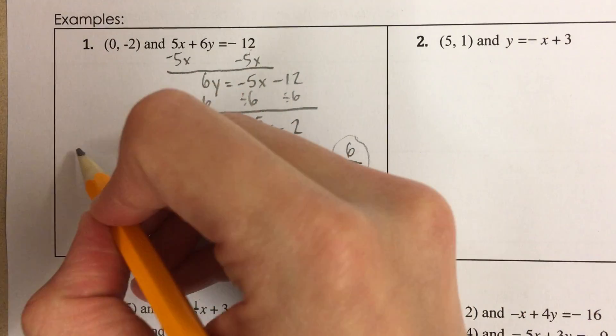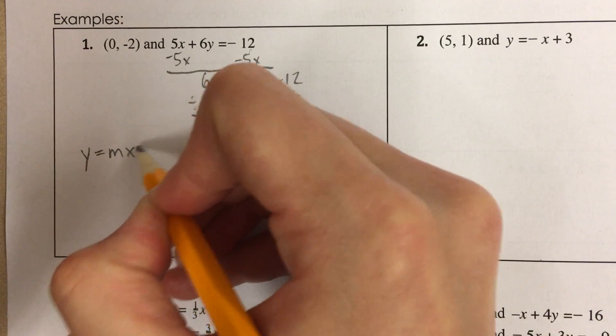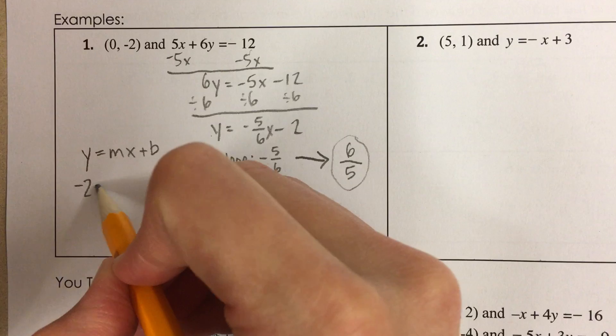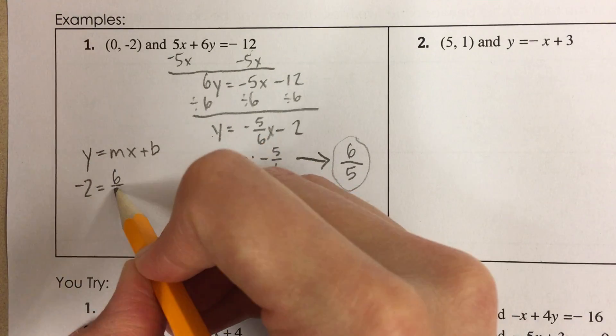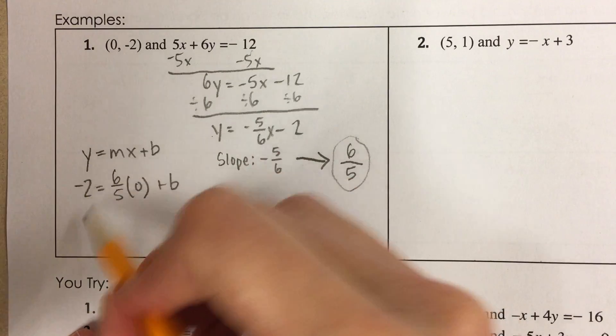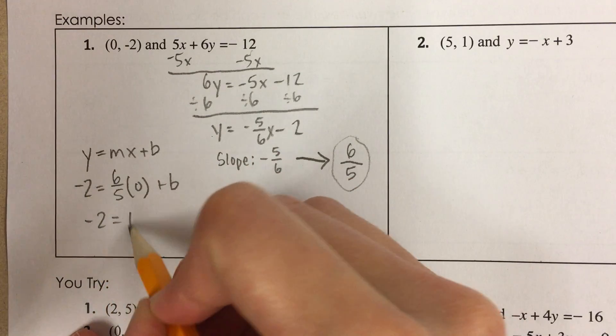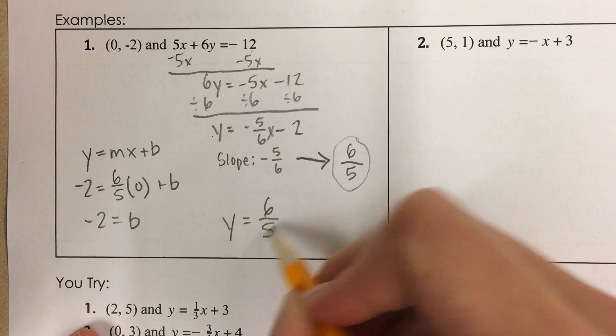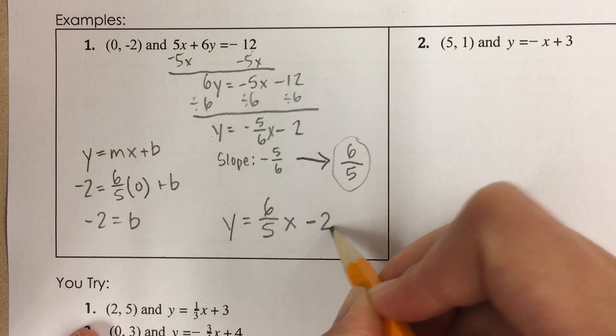So now I have my slope. So now I need to do the same thing I did. Use my slope, plug in the point. So y equals mx plus b. This just cancels to 0 and I get negative 2 equals b. So I get y equals 6 fifths x minus 2.